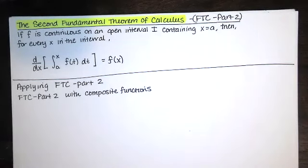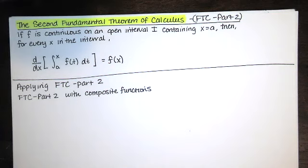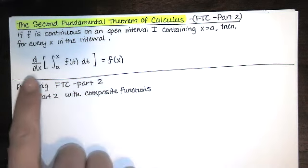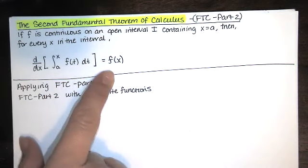This video is about the second part of the fundamental theorem of calculus, or what our textbook authors call the second fundamental theorem of calculus — I'll abbreviate that FTC Part 2. It says that if f is a continuous function on an open interval I, and that interval contains the value x equals a, then for every x in that interval the derivative of this is equal to this.